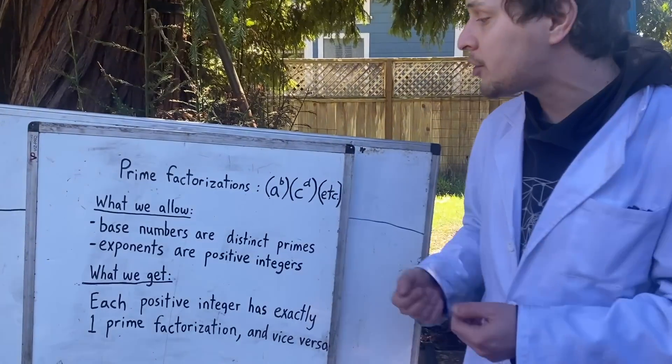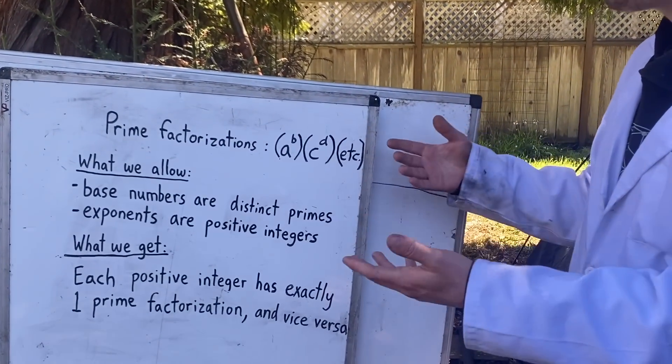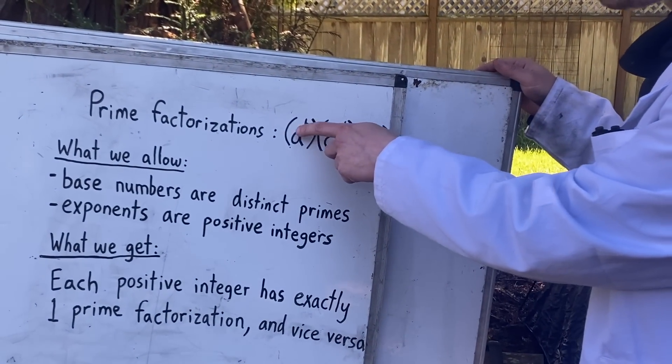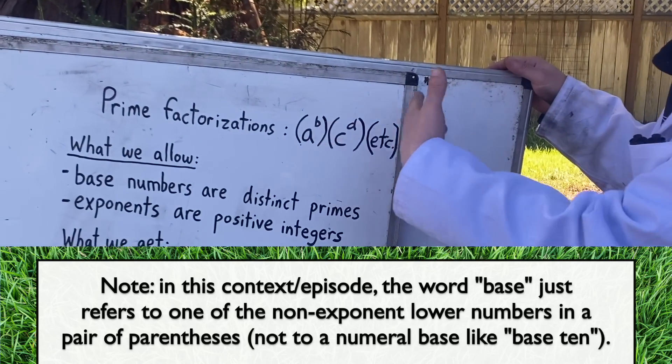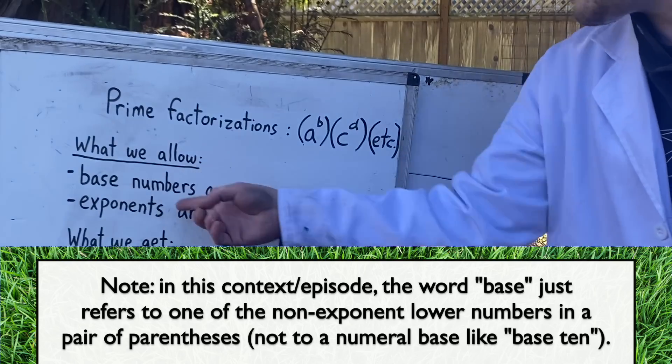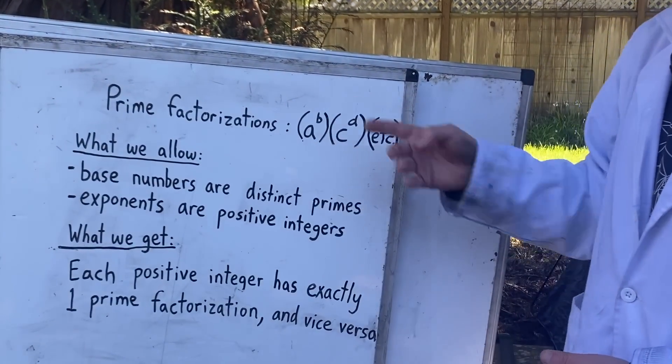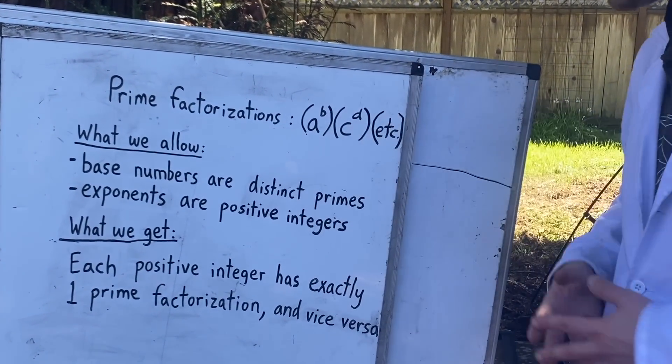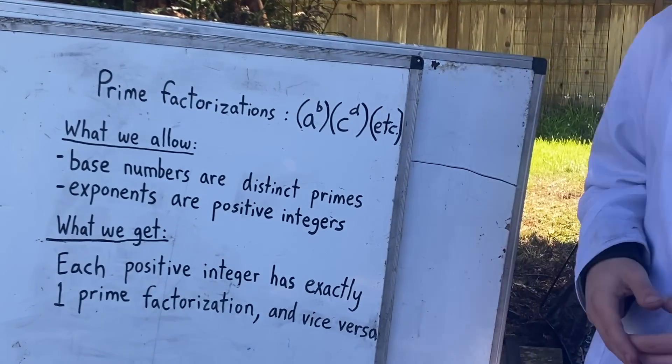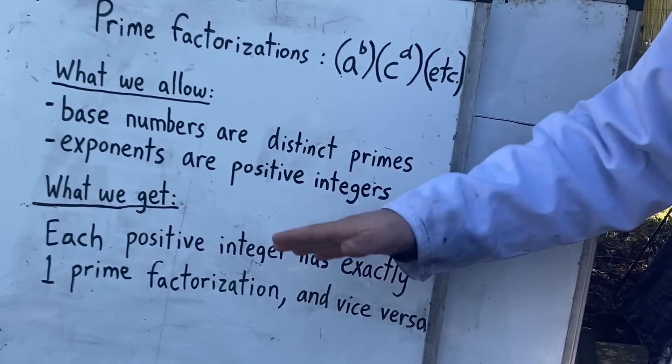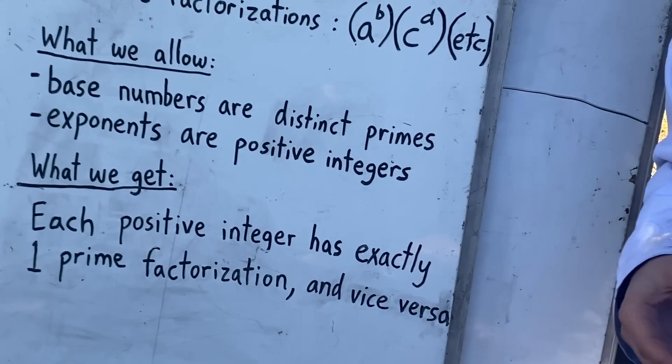In the case of prime factorizations, we allowed a string of things multiplied together, where those things involved some base number raised to some exponent number as a power, and the base numbers were allowed to be distinct primes, and the exponents were allowed to be any positive integer. And what we got from that system was that every positive integer has exactly one prime factorization that describes it.